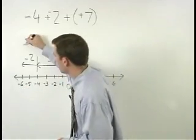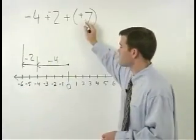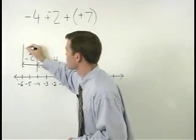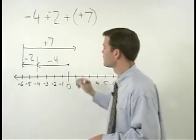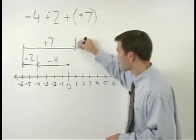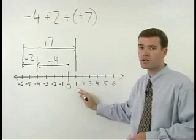From that point, positive 7 moves us 7 units back to the right. So we end up at positive 1.